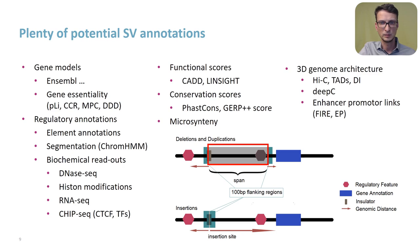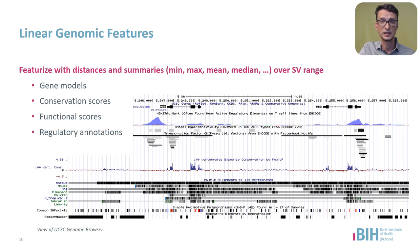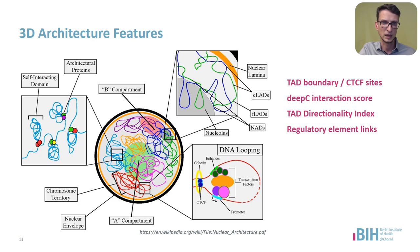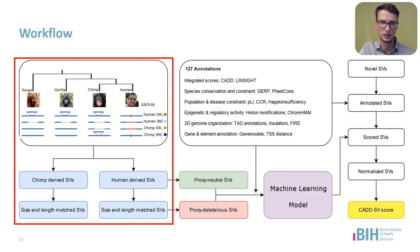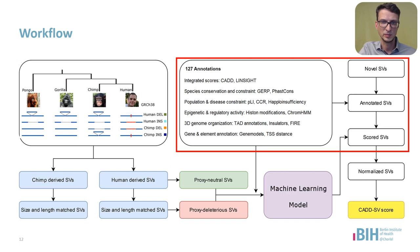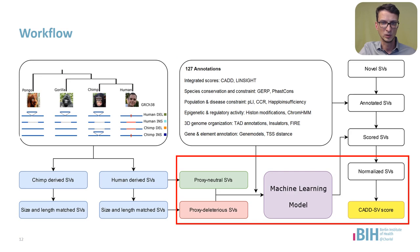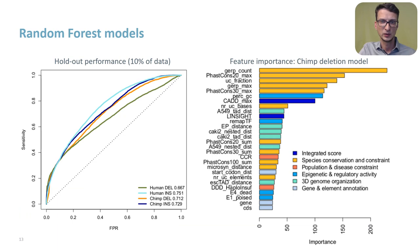We will generally annotate variants across their span, in the 100 base pair flanking region, and with distance features to annotated genes and elements. Across the spans, we are calculating summaries like min, max, mean, or median. In addition to the many genomic annotations describing linear genome features, we also include a number of annotations that are supposed to capture the genome's 3D architecture. To briefly recap the overall workflow: we use the previously identified human and chimp-derived SVs, complement them with randomly drawn SVs of the same size, annotate these SVs, normalize all the annotations based on their appearance in population SVs, and train a random forest machine learning model that we can then use to score new variants. All four models show a non-random performance on a holdout set of the training data, which shows that there is a purifying selection signal between the derived variants and the simulated ones.